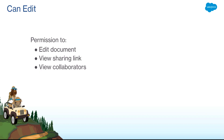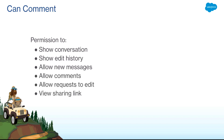Can edit allows you to edit a document, view the sharing link, and view collaborators. Can comment is essentially the view-only link sharing permission. This allows you to show a conversation, show the edit history, allow new messages, allow comments, allow requests to edit, and view the sharing link.